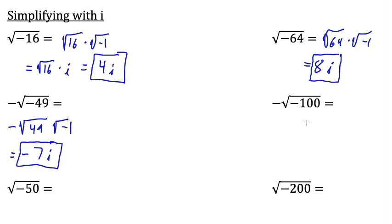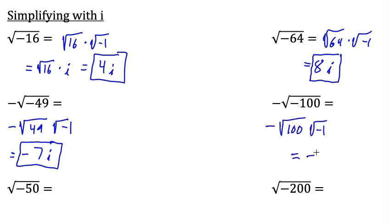Here's a similar problem. We have negative square root of negative 100 times the square root of negative 1, which equals negative 10 times i, or negative 10i.